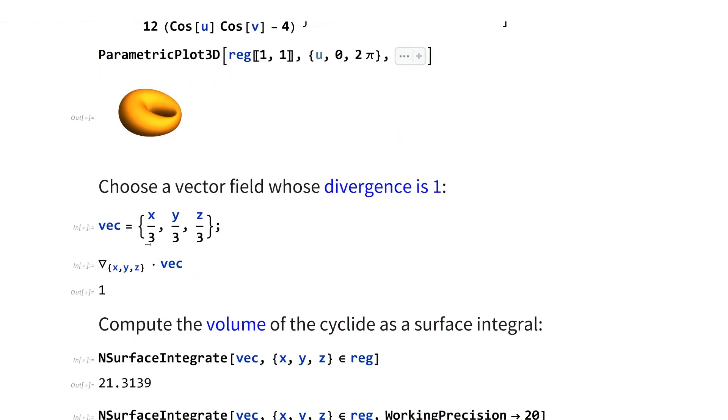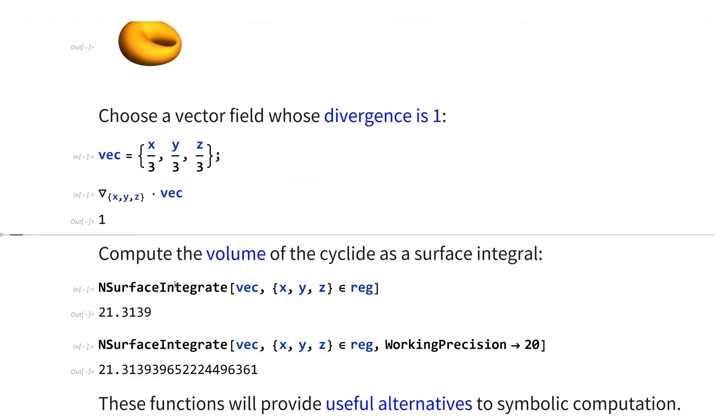So you say, okay, choose a vector field whose divergence is 1. And you can see, that's one over three plus one over three plus one over three gives you one for divergence. And then you can apply the Gauss theorem to use NSurfaceIntegrate to give you a numerical approximation for the volume of the cyclide, found as a numerical surface integral.